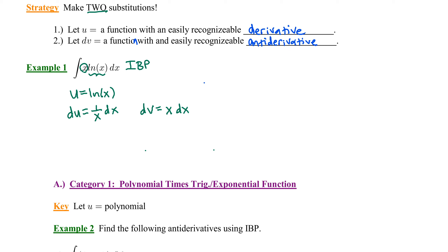This is totally new — we're saying that natural log of x we rewrite as u, and the leftovers, x dx, we replace with dv. In order to do this, we also need to find v. V is obtained by integrating both sides: the integral of x dx is one-half x squared. The plus c is not necessary with integration by parts. We chose u to be easily differentiable, and dv to have an easily recognizable antiderivative.